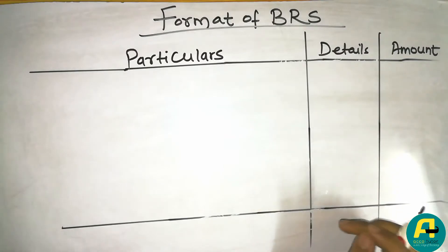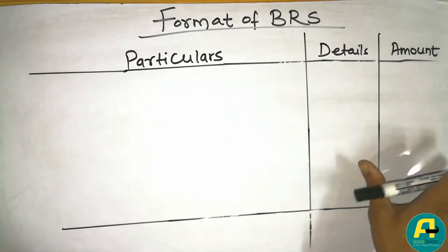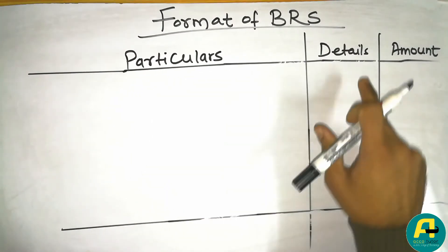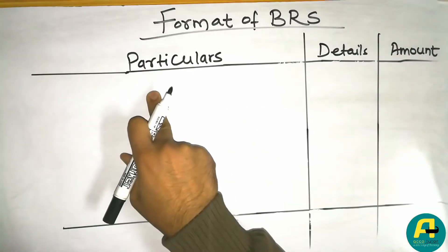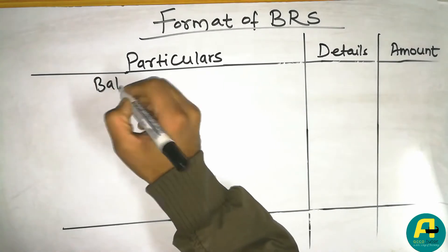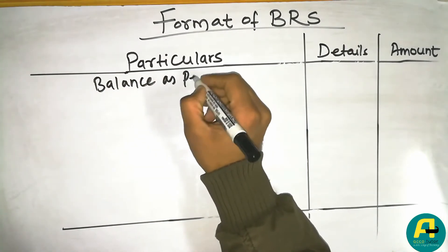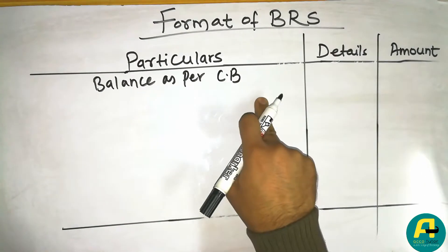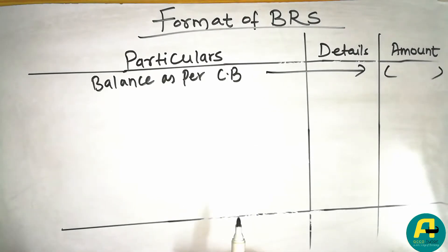Now I'm going to show you the format of the Bank Reconciliation Statement. First, you make columns for particulars, details, and amount. From the question you will see: 'Balance as per cash book' — you write that balance amount. If you have the cash book, you go to the cash book to find that balance.